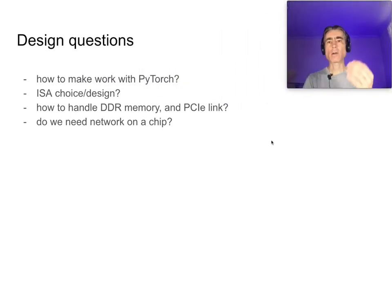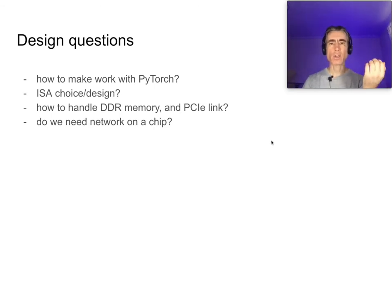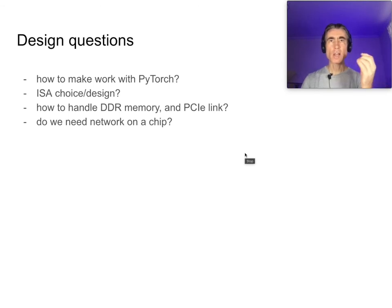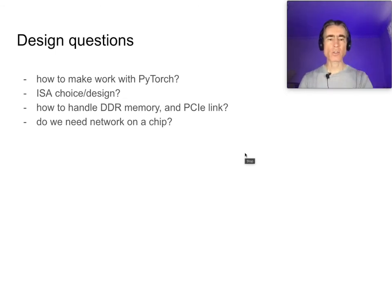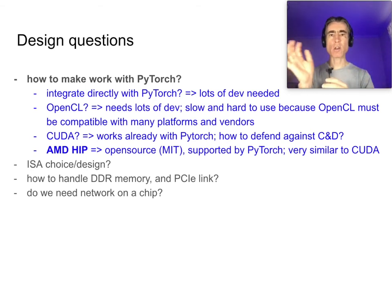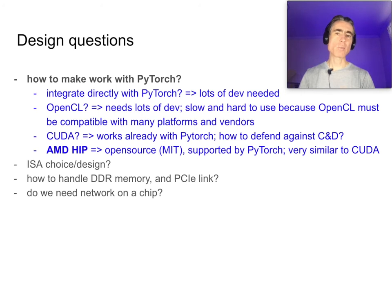Some design decisions where the answers were least clear to me. How to work with PyTorch, ISA choice, how to handle DDR memory and the PCIe link, and do we need a network on a chip. For PyTorch integration, one option is to integrate directly — modify PyTorch to call directly into our VariGPU code. The issue is lots of development would be needed and PyTorch will push back because we're not using a standard interface.